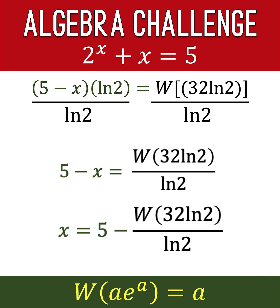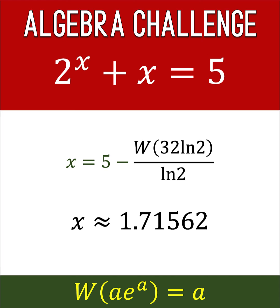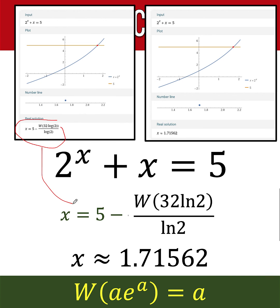This answer is already acceptable. But if you want to find the exact decimal value, we can use a calculator. Using the Wolfram Alpha online calculator, we can evaluate this product log function to get x approximately equal to 1.71562. This matches the graphical solution of x equals 1.716 that we found earlier.